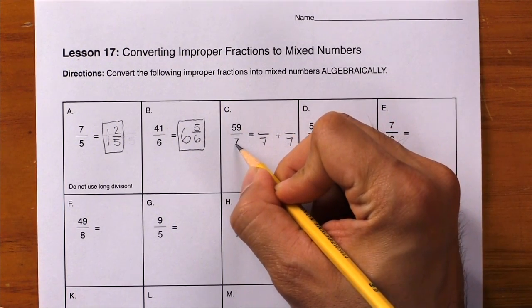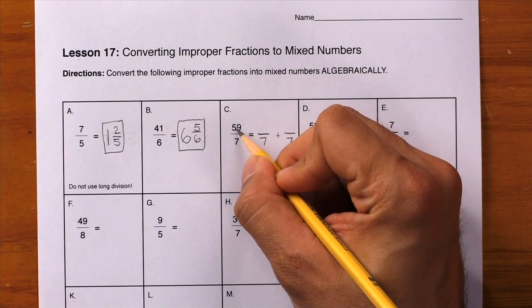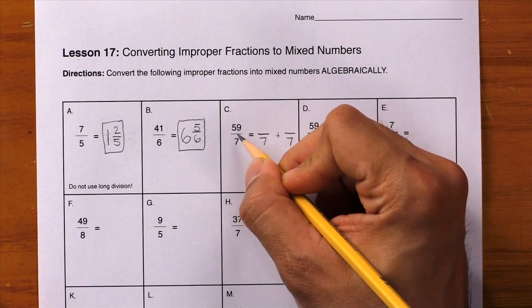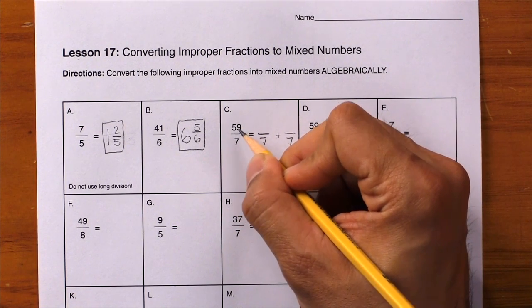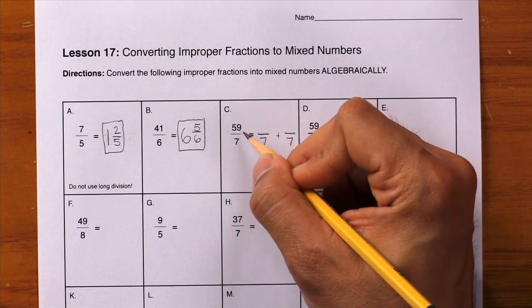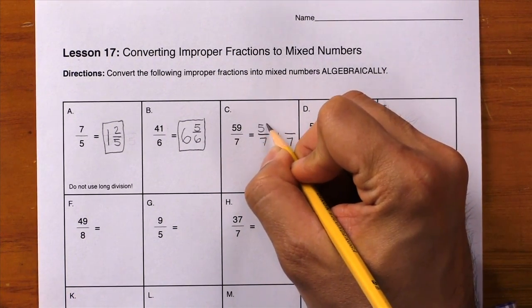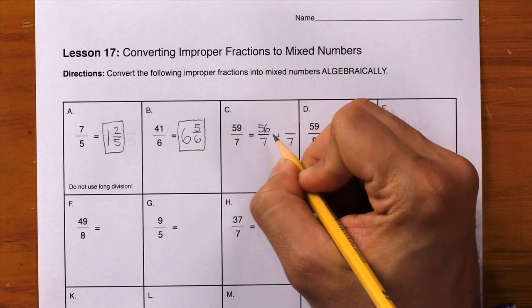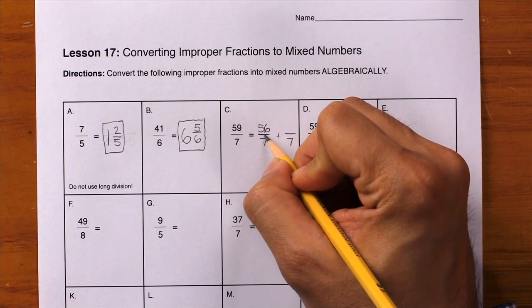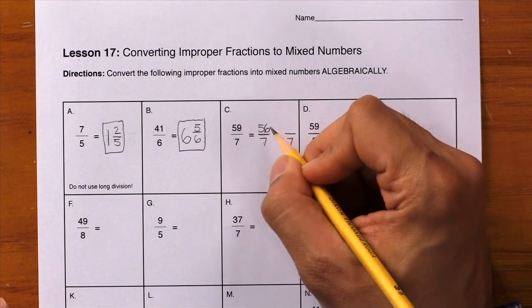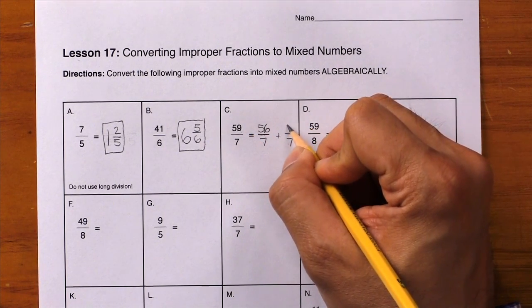Can you do 59 divided by 7? No, so we're going to count backwards. 58 is not going to work, 57 won't work, but 56 divided by 7 will work, so write down 56 right away. Now 56 plus what number will give me 59? The answer here is 3, so write it down.